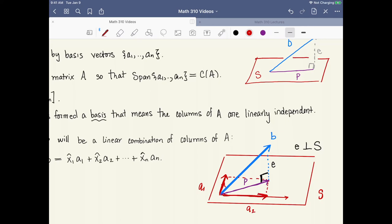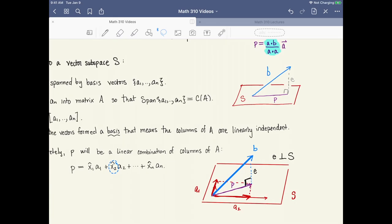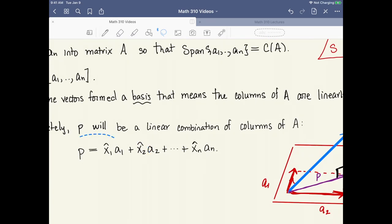So how I find the projection vector p is answering the question: how much do I scale out or back these vectors a1 and a2 so that I get the right diagonal of a parallelogram? In effect what I'm asking for are these scalars x1 hat and x2 hat, that is the amount that I scale so that I produce the right linear combination to give me this projection vector p.